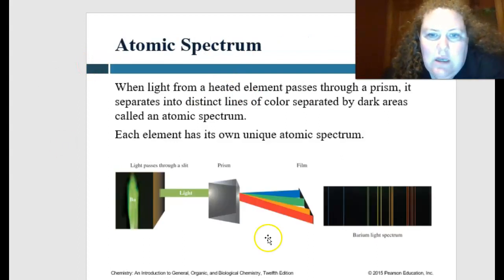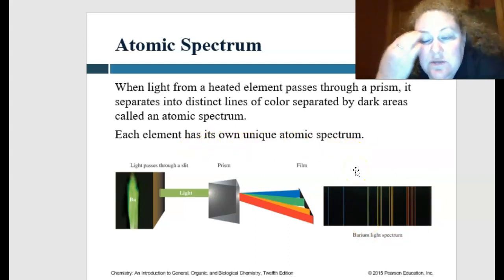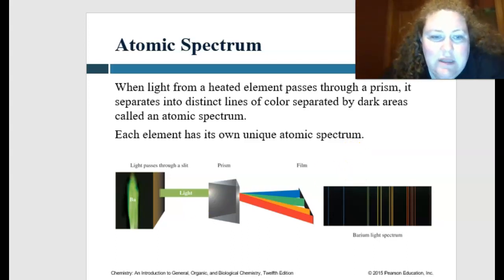We can see this when we look at the atomic spectrum. When light from a heated element passes through a prism, it's going to separate out the light into distinct lines of color separated by dark areas. This is called the atomic spectrum. Each element has its own unique atomic spectrum, and so this is fun for scientific diagnostic reasons and study because everything is unique.